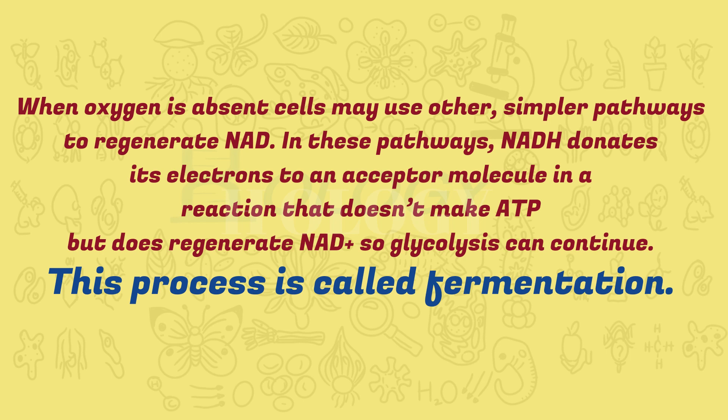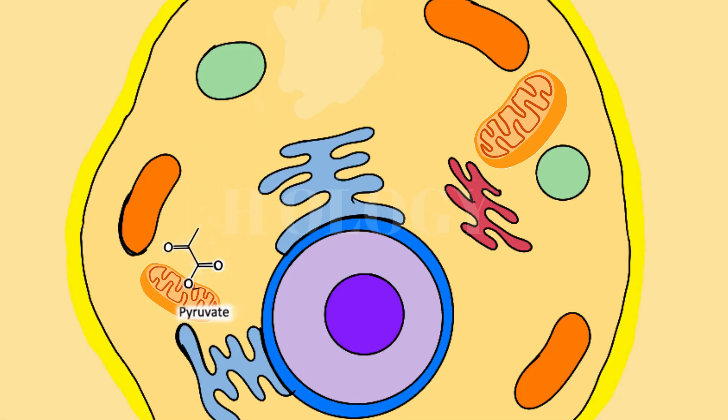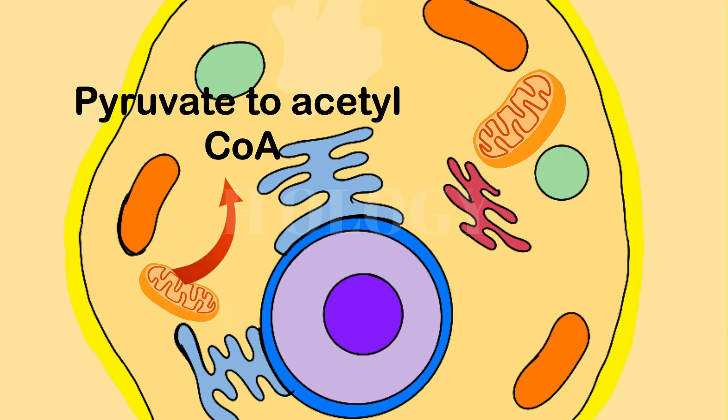In eukaryotic cells, the pyruvate molecules produced at the end of glycolysis are transported into mitochondria, which are the sites of cellular respiration. There, pyruvate will be transformed into an acetyl group that will be picked up and activated by a carrier compound called coenzyme A.